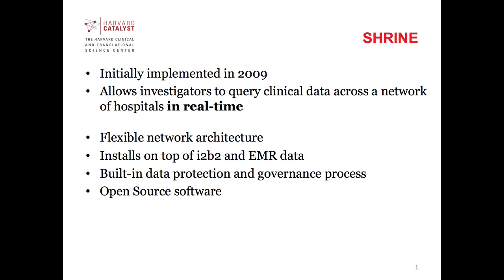SHRINE uses a very flexible network architecture — it can be fully meshed or hub-based. There have been many implementations of both. It has been built on top of I2B2. Because SHRINE is designed to support a large user community across different institutions, built into SHRINE is a data protection and governance process, which I'll describe in a little bit more detail in future slides.